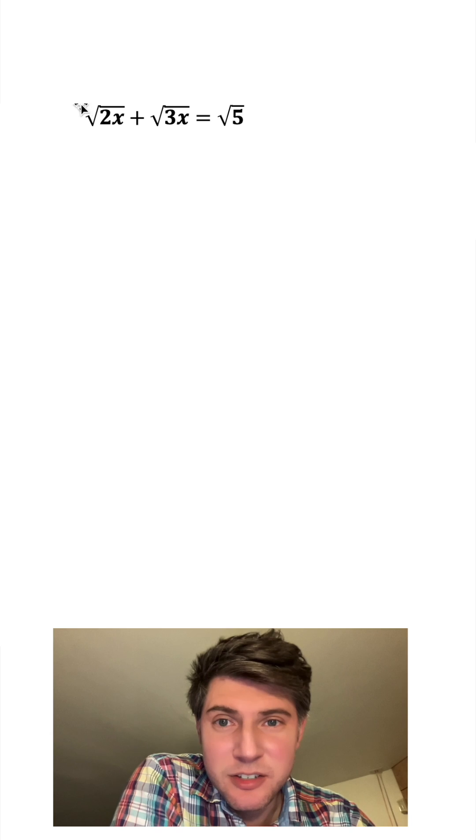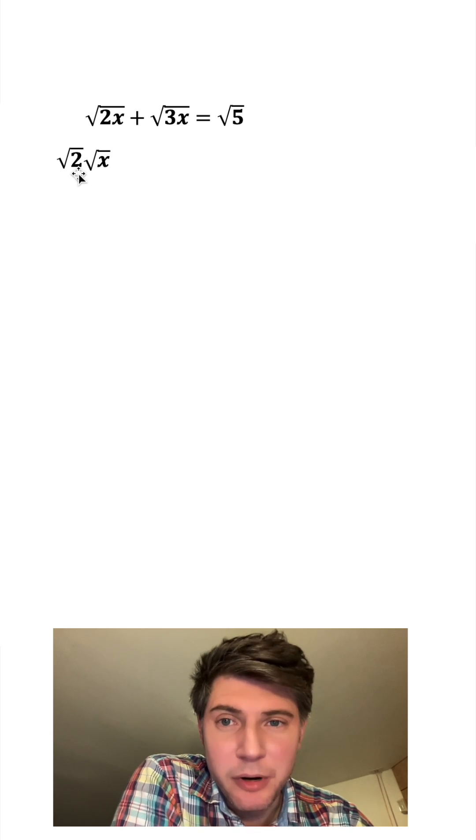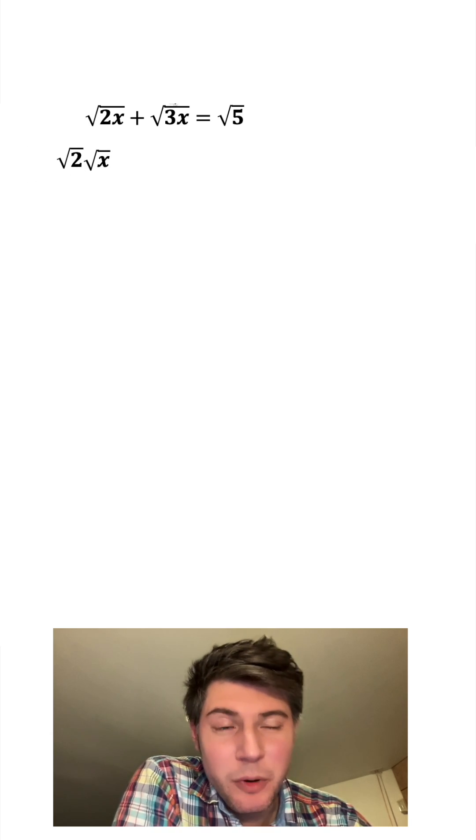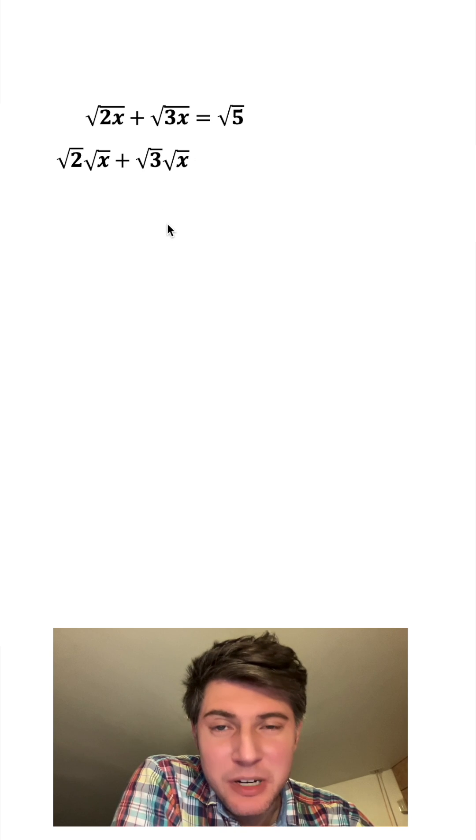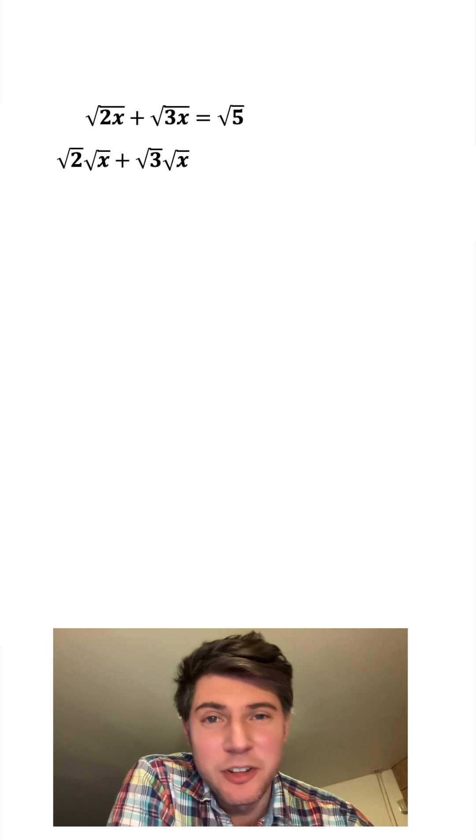So first thing we can do is separate these. This square root of 2x can become square root of 2 times square root of x. This square root of 3x can become square root of 3 times square root of x, and that's still equal to the square root of 5.